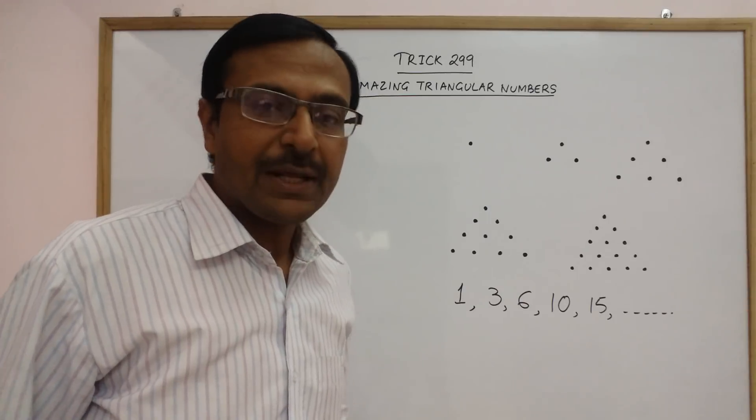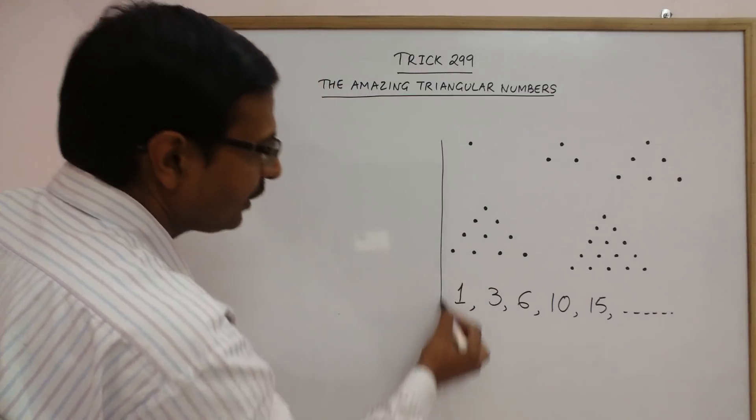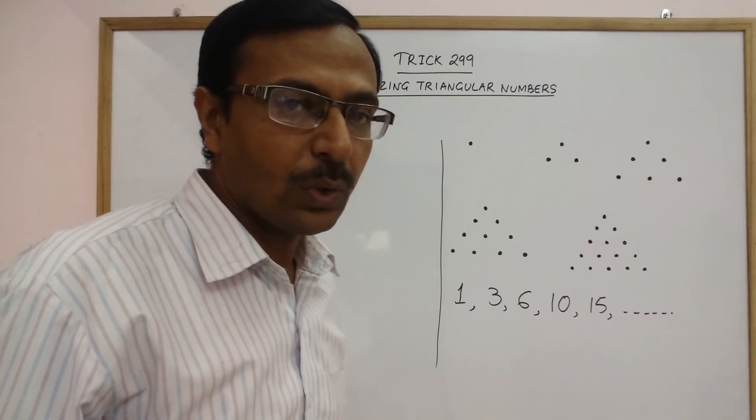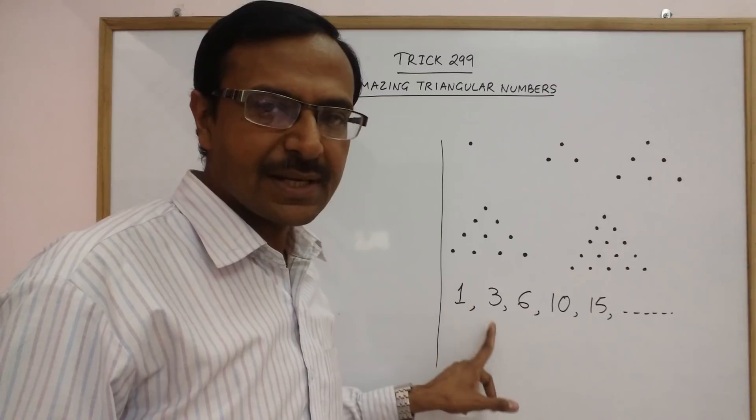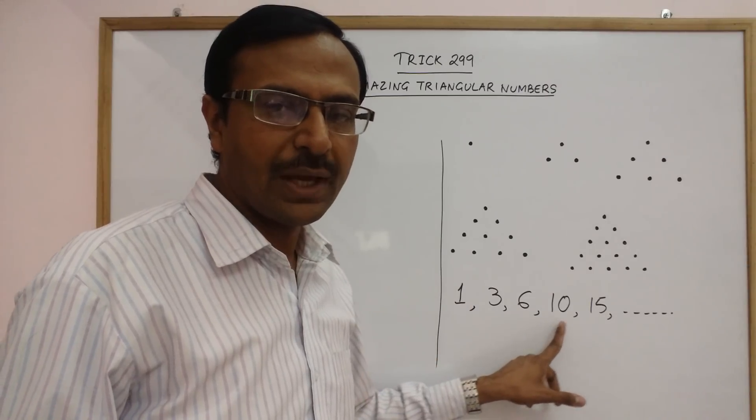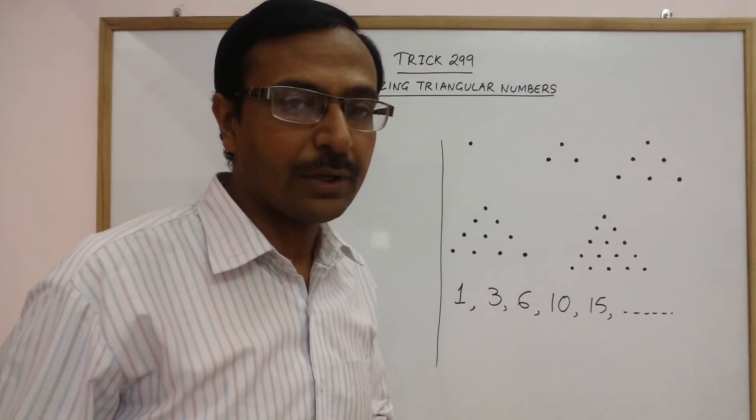Now, the first property is how do we obtain a particular triangular number? Now, see this is the first triangular number, second, third, fourth and fifth. So, I have drawn 5 triangular numbers.